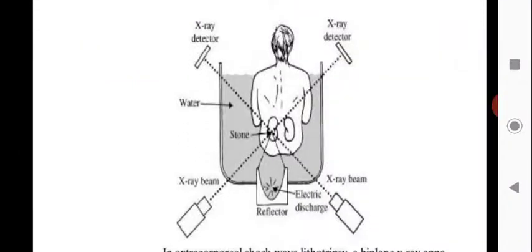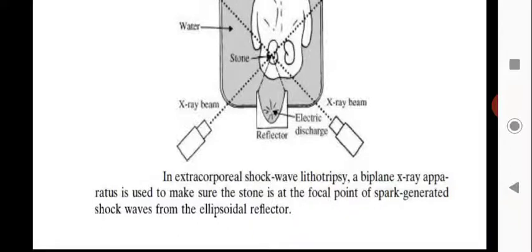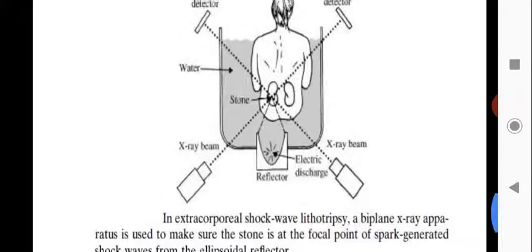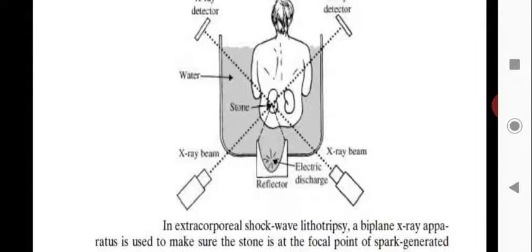An x-ray detector is used and the person sits in the chamber while a high-intensity beam is passed, breaking the stone into small particles. A biplane extra apparatus ensures that the stone is at the focal point of spark-generated shock waves from an ellipsoidal reflector. The reflector reflects the intensified beam onto the stone and reflects it back again, ensuring the stone is fully broken into pieces.